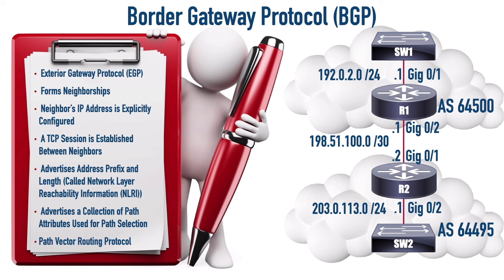A vector carries two pieces of information: magnitude and direction. Distance vector protocols like RIP and EIGRP don't have a map of the entire network like OSPF and ISIS do; instead, they know their next hop - a vector pointing in a direction to get to a network, with a metric for distance. With BGP, we're still identifying the next hop to get to a destination, but the 'path' in path vector refers to the autonomous systems we have to travel through to reach our destination. We can literally see: to get to this network, I'll go through this AS, then this one, and finally arrive in the AS where my network lives.